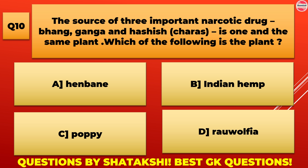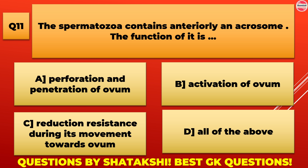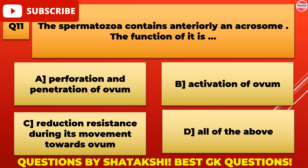B. Indian hemp is the correct answer. The spermatozoa contains anteriorly an acrosome. The function of it is: A. Perforation and penetration of ovum, B. Activation of ovum, C. Reduction of resistance during its movement towards ovum, D. All of the above. A. Perforation and penetration of ovum is the correct answer.